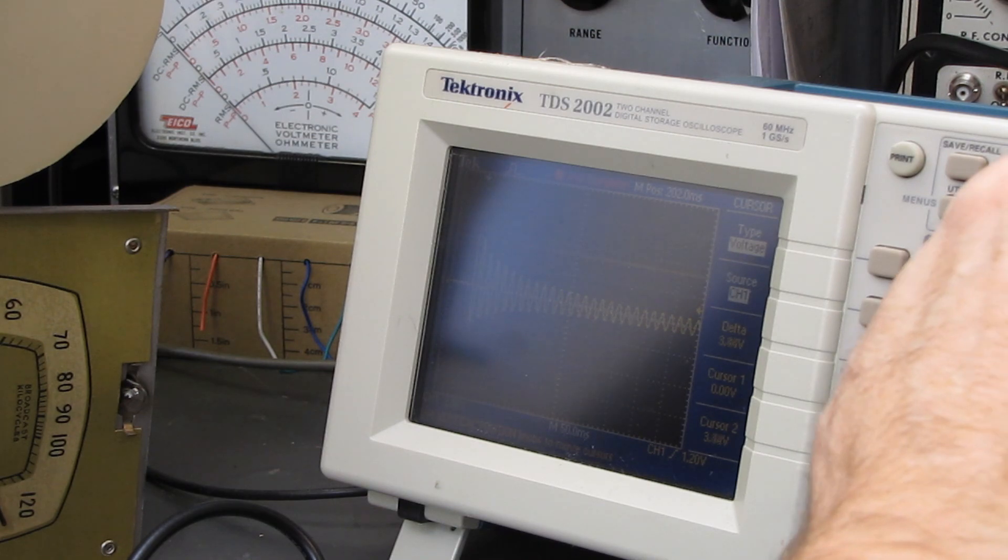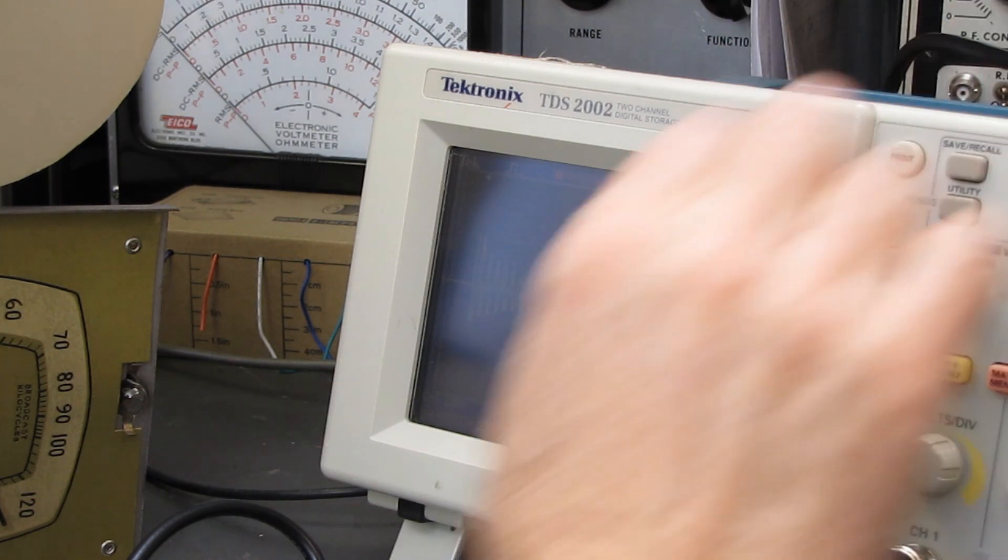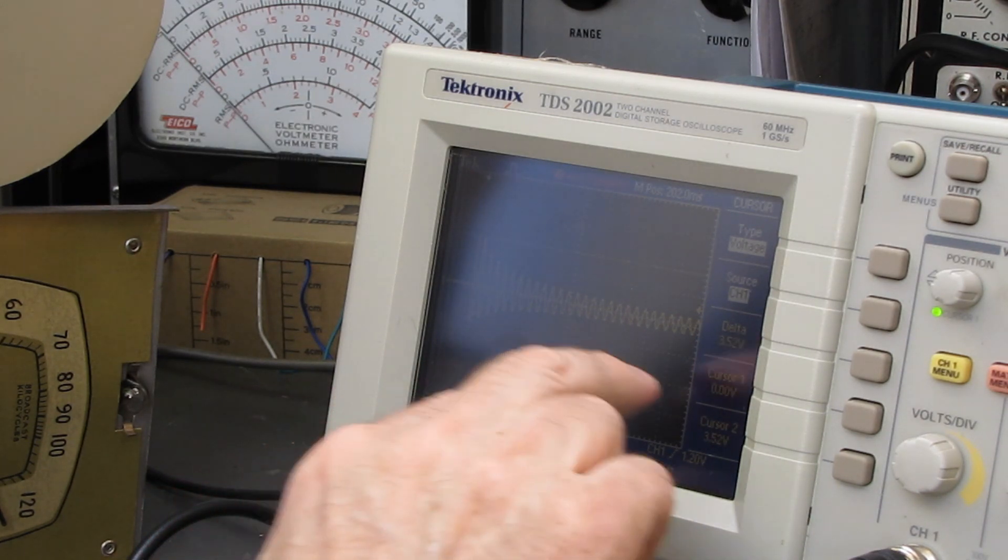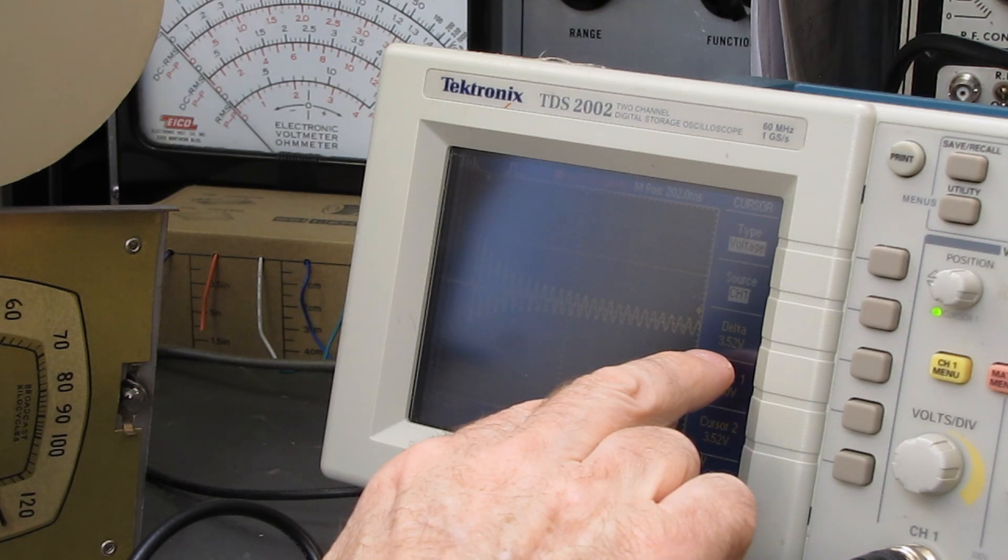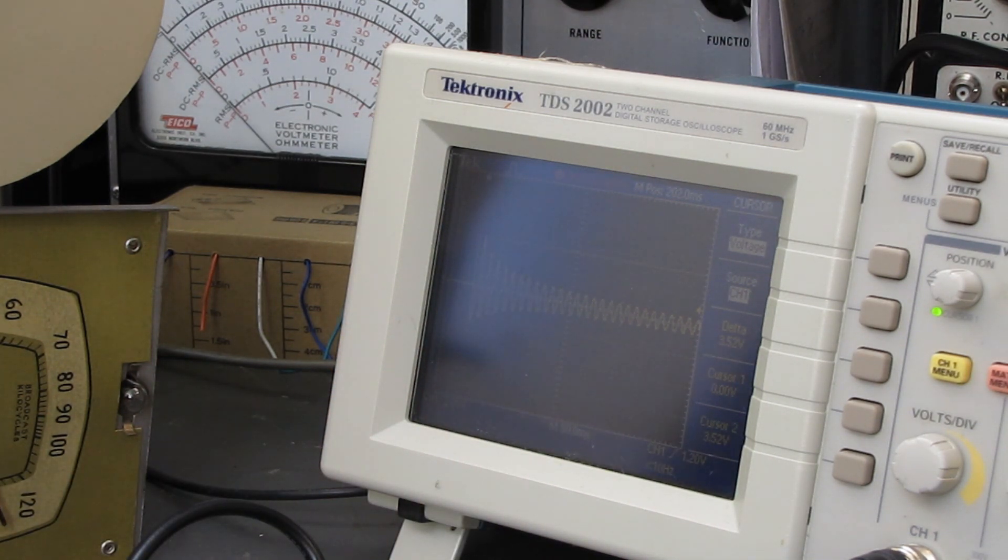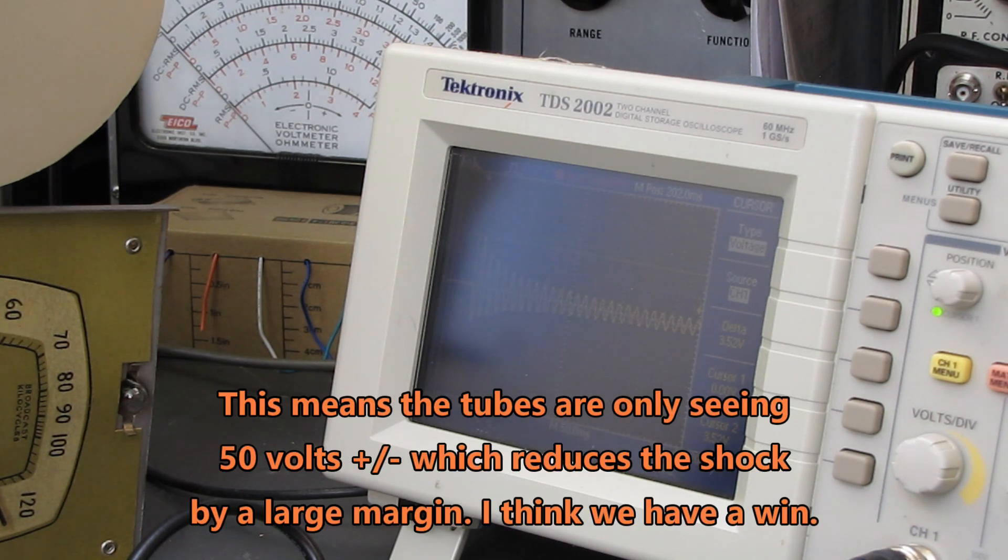Now let's see what the voltage is here. Cursor is cursor. That one. Okay, my delta is 3.52 volts peak. So that's times 20 because it's a 20 to 1 reduction in the differential probe. So 3.52 times 20 equals 70.4 volts it's dropping.